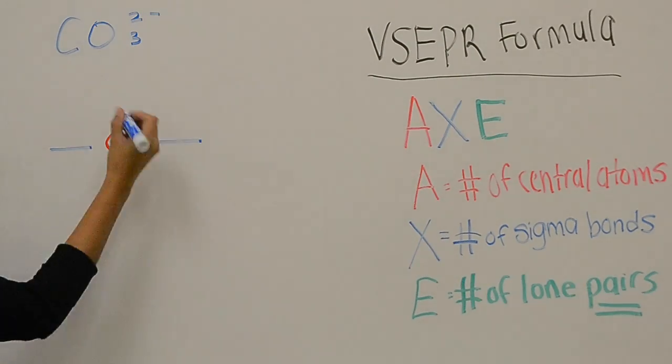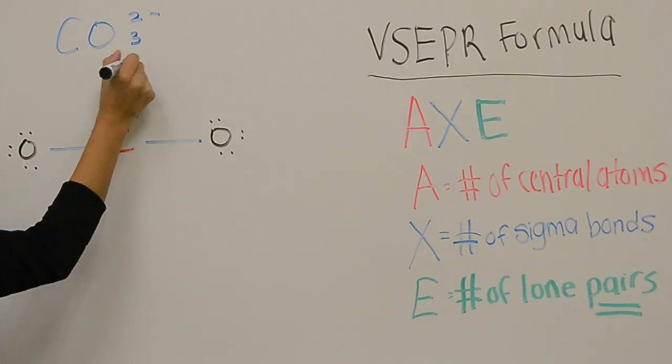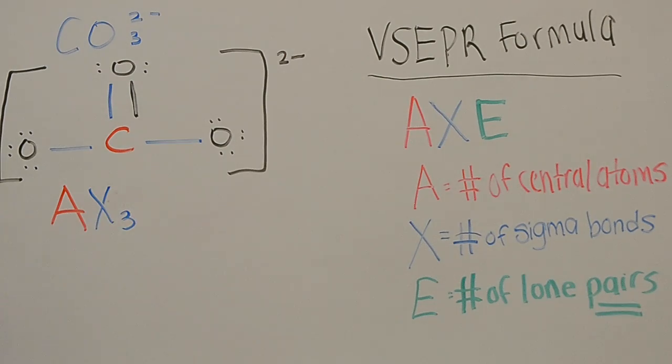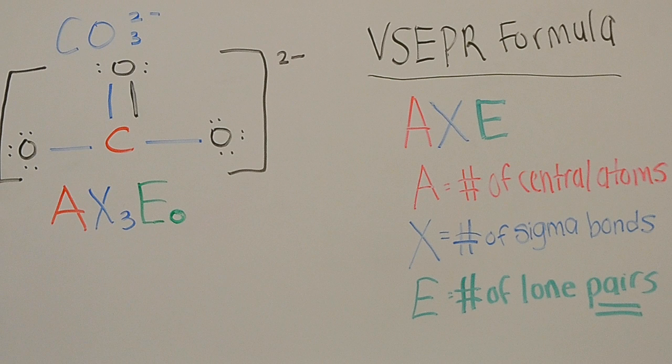Let's do another example with carbonate. Based on the Lewis structure, we can see that there's double bonds, but that doesn't mean that the subscript of X is 4 because, remember, we're counting the number of sigma bonds, not individual bonds. So it will be AX3E0.